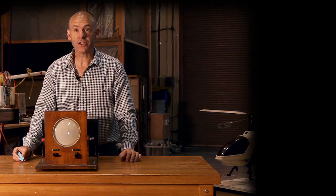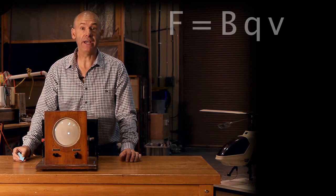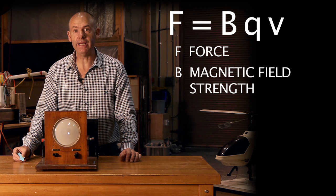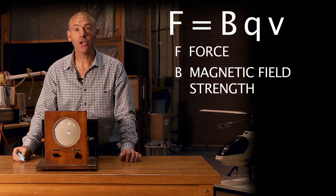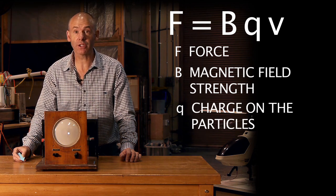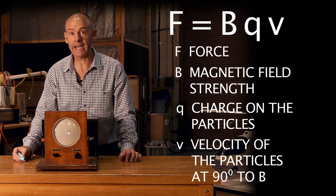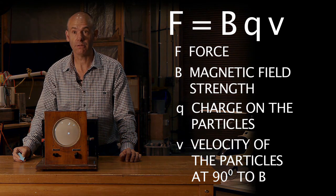The equation that describes this effect is F equals BQV, where F is the force, B is the magnetic field strength, Q is the charge on the particles, and V is the velocity of the particles at right angles to the magnetic field.